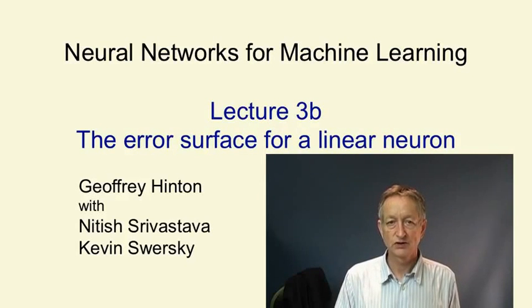In this video, we're going to look at the error surface for a linear neuron. By understanding the shape of this error surface, we can understand a lot about what happens as a linear neuron is learning.